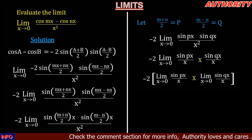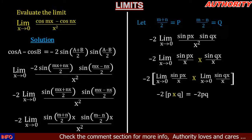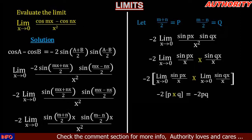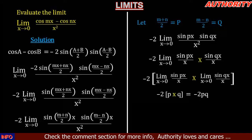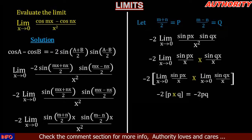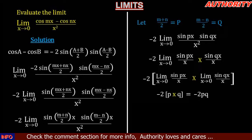When we have the limit as x approaches zero of sin(px) all over x, it equals p. And the limit as x approaches zero of sin(qx) all over x equals q. So we have minus two times p times q, which gives us minus two pq.